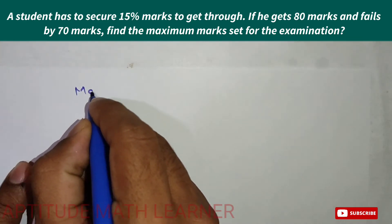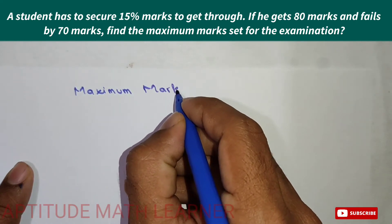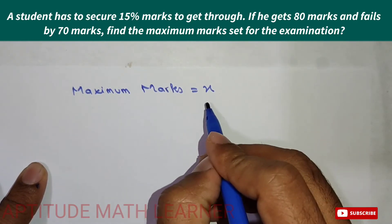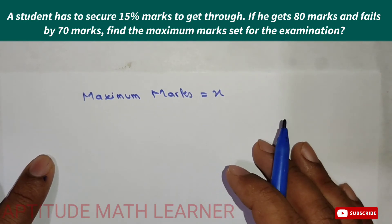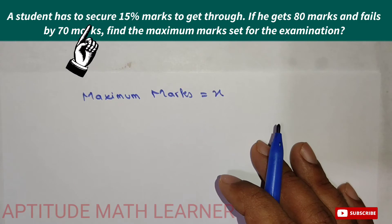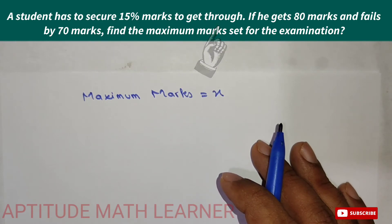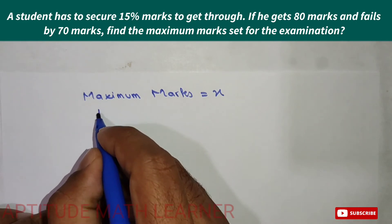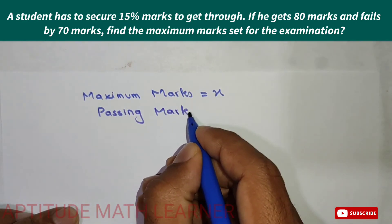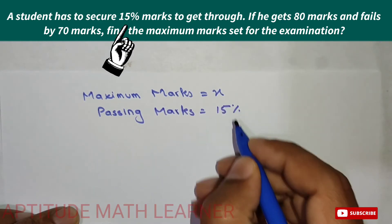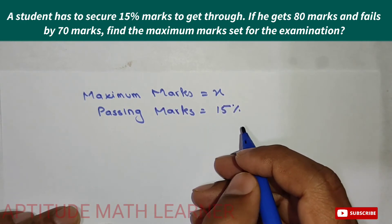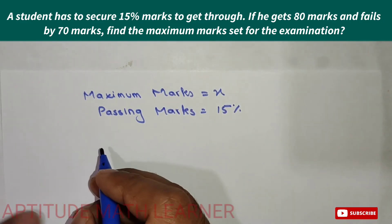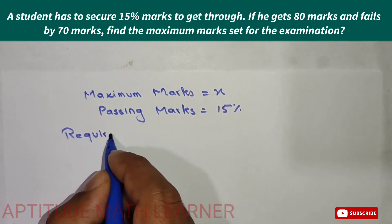We have taken the maximum marks as x. The question says a student has to secure 15 percent marks to get through, meaning the passing marks will be 15 percent of the total marks. So we take the passing marks as 15 percent of x, and we define the required marks to pass from this.